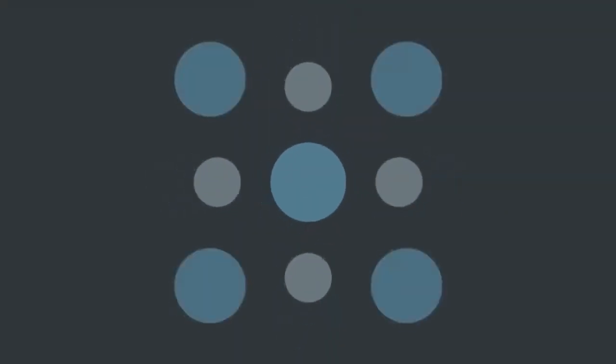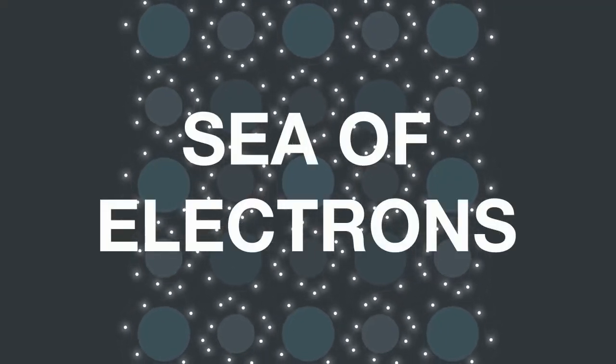When we talk about metallic bonding, we are describing the electrostatic attraction between the metal ions arranged in a lattice structure and the free-floating electrons around them. Since these electrons are free to move around, the term sea of electrons is also used.